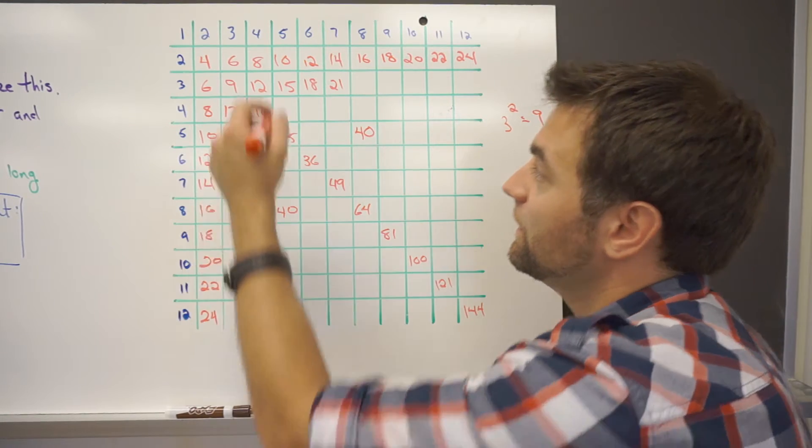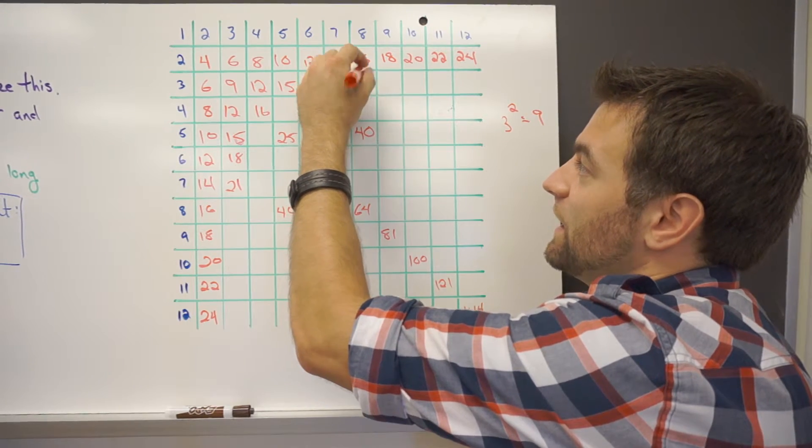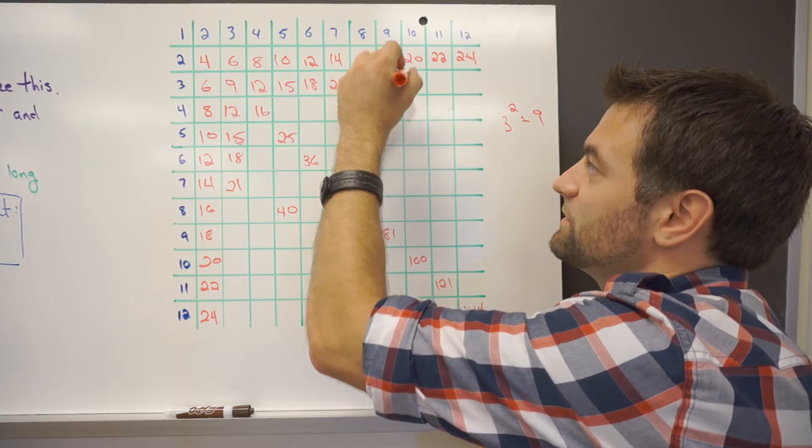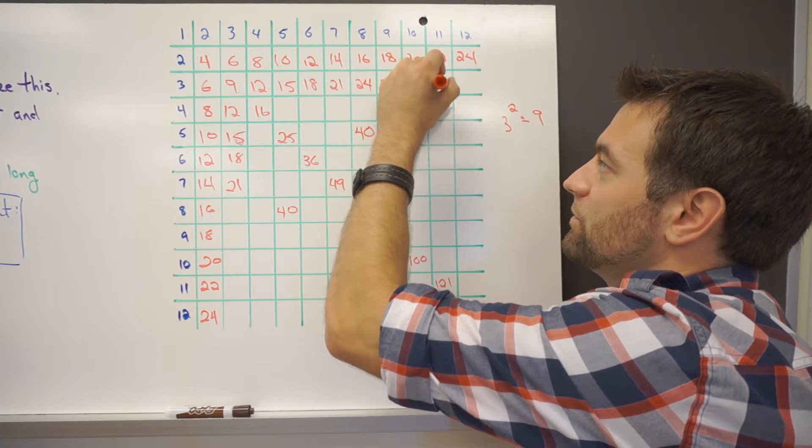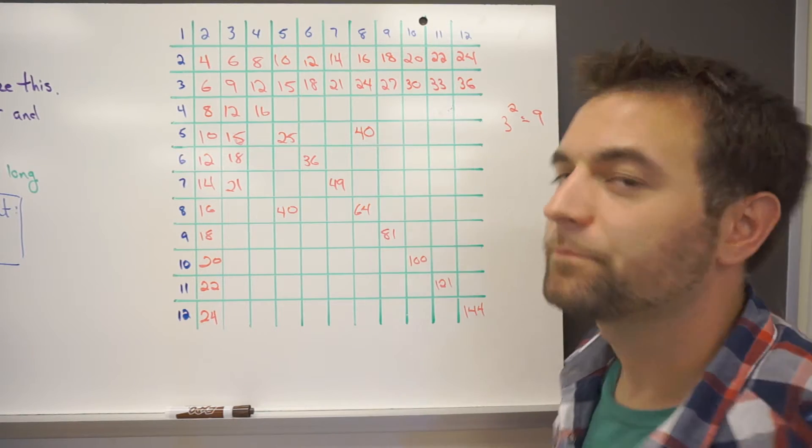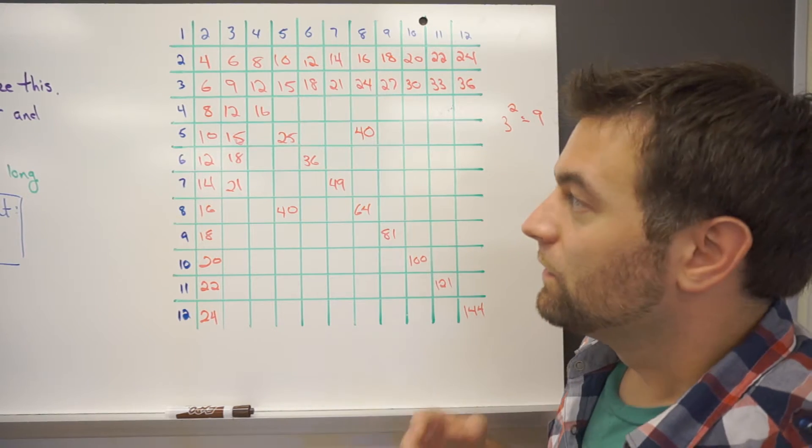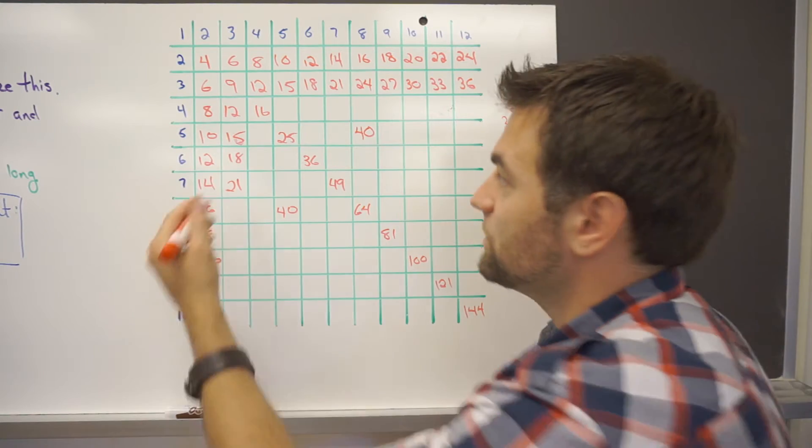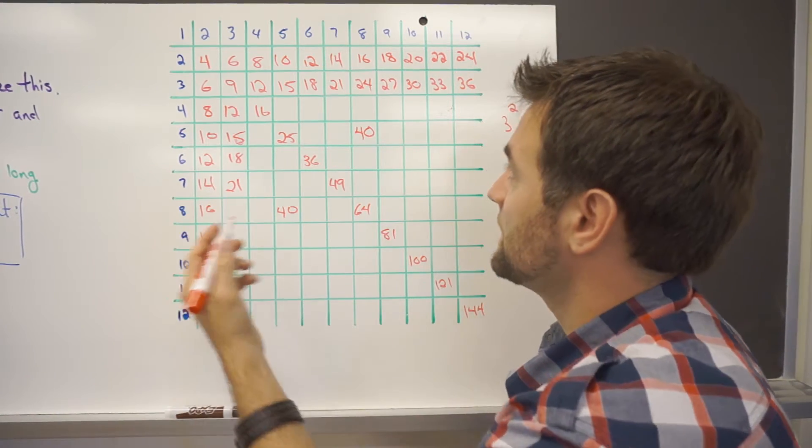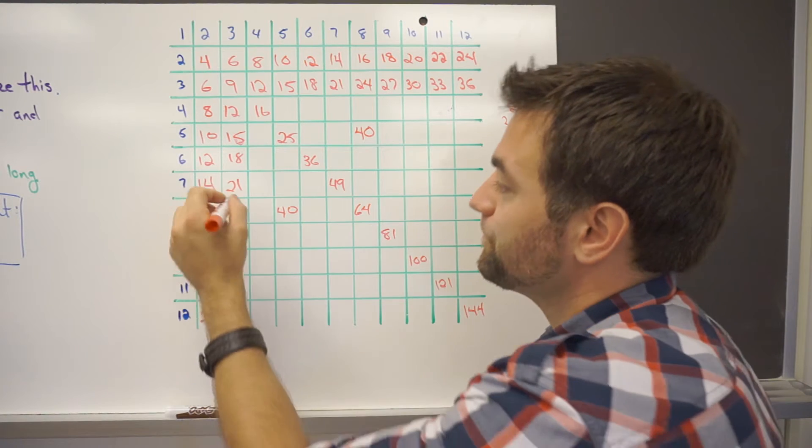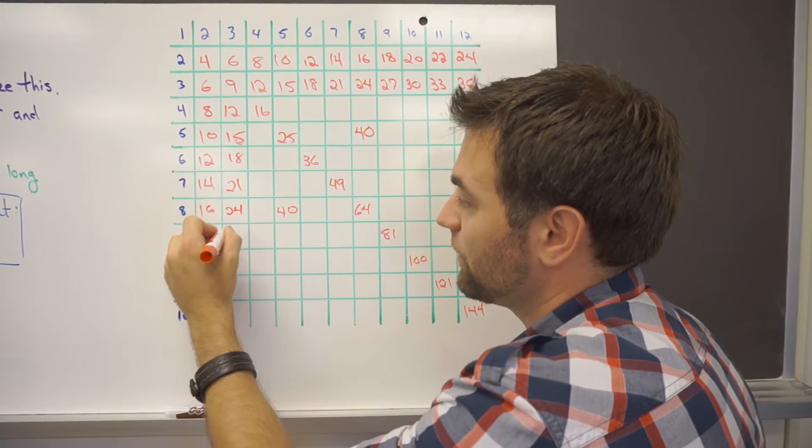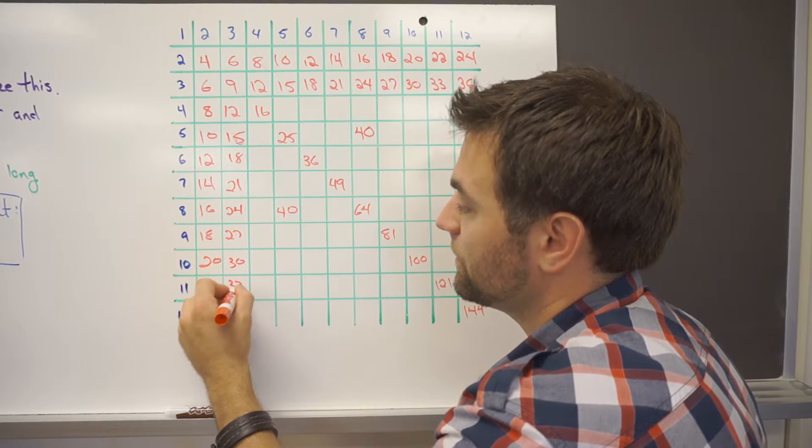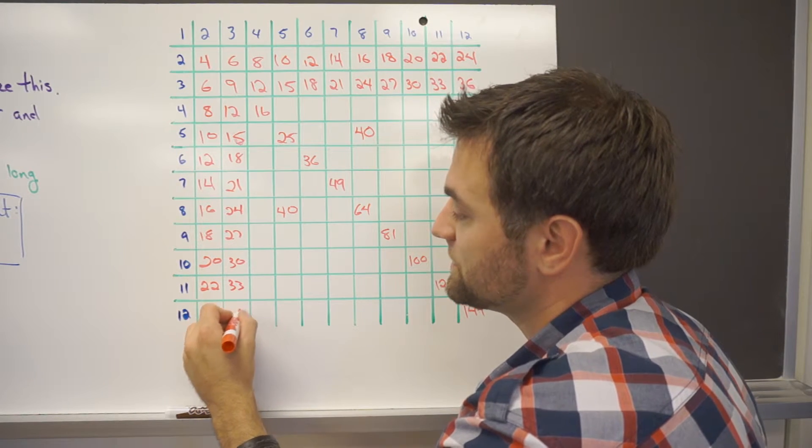And if we continue on here with the 3s, we have 24, 27, 30, 33, 36. Now, you can quickly fill in the table like this, especially when you're getting started. You can do these rows and you can then start mirroring them, which makes, again, a lot easier for you. So we have the 24, 27, 30, 33, and 36.